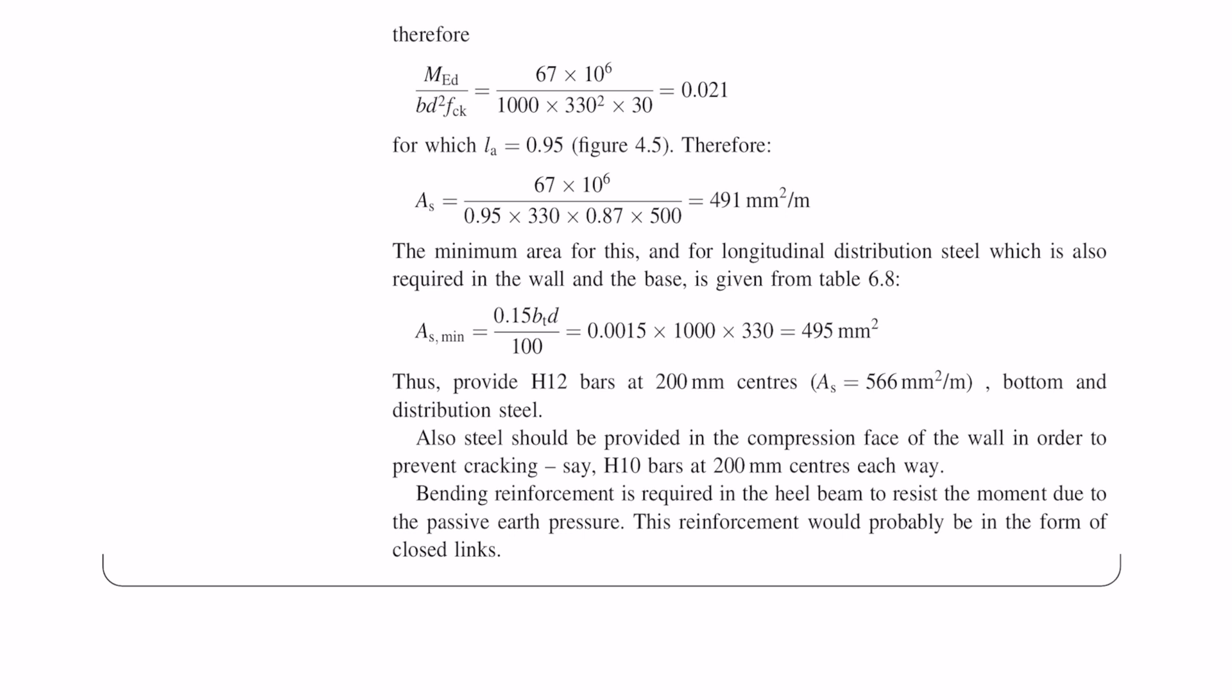The one thing the textbook example doesn't check is checking the bearing pressure against what the soil can actually resist. On a real project you'll be given an allowable bearing pressure from the geotechnical engineer or report, and basically what you calculated via the bearing pressure or what's applied from the wall, you just want to make sure that that maximum value is less than the allowable bearing pressure.